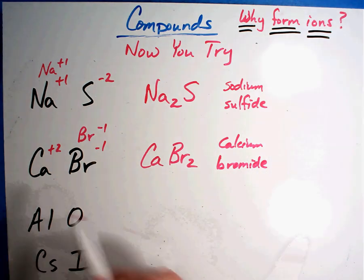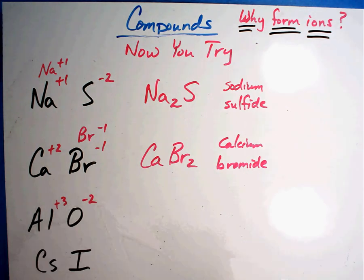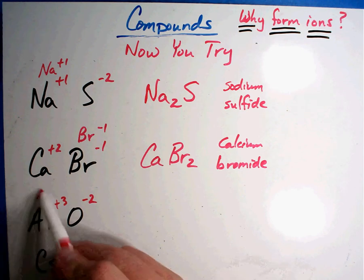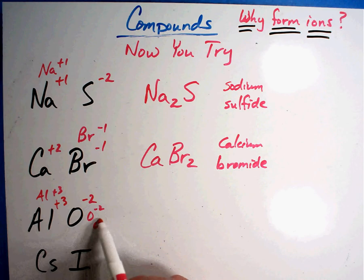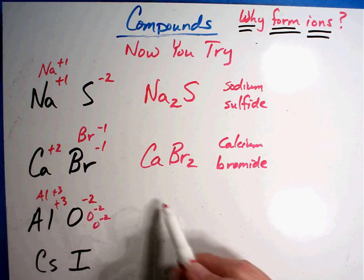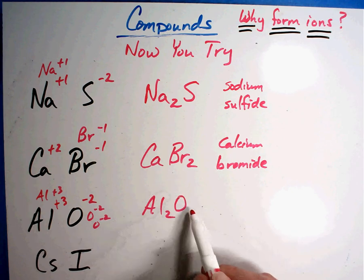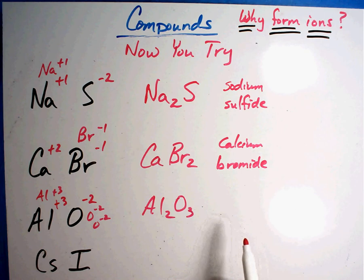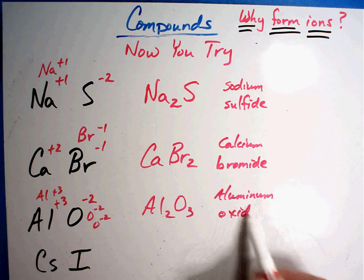In the next one, aluminum is plus three and oxygen is minus two — those charges came from the chart. Those really don't equal zero. We had one like this in the instructions: they both go into six. So I need two aluminums at plus three each — that's six — and three oxygens at minus two each — that's also six. So the formula is Al₂O₃, and this one is called aluminum oxide.